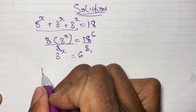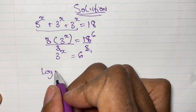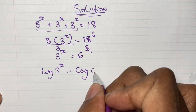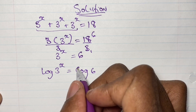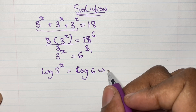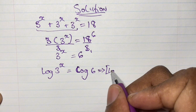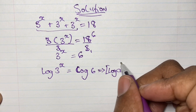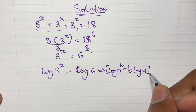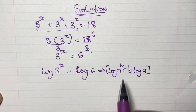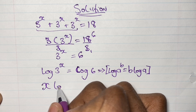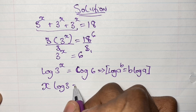Now we can use logs to solve the value of x. We have log of 3 to the power of x is equal to log 6. This means we can use our log rule — log a to the power of b is equal to b times log a — so we can write x times log 3 is equal to log 6.